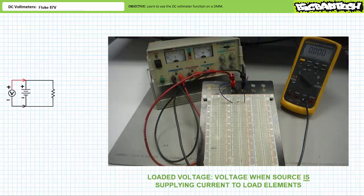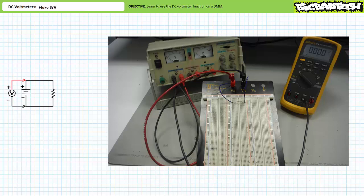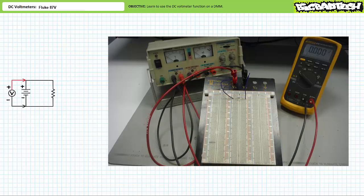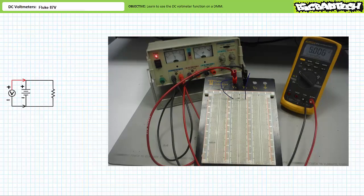Let's use the DMM in DC voltmeter mode to measure the loaded voltage supplied by the source — meaning the voltage differential established by the source when it is providing current to load elements in a circuit. This is in contrast to the unloaded or open circuit voltage measured previously. Ideally, we should observe roughly 5 volts. This requires we take the DMM out of ohmmeter mode and put it back in DC voltmeter mode. Use the checklist: function, leads, range, placement. The black common lead is placed on the black negative terminal of the source, and the red lead on the red positive terminal. As anticipated, we observe a voltage rise of roughly 5 volts.